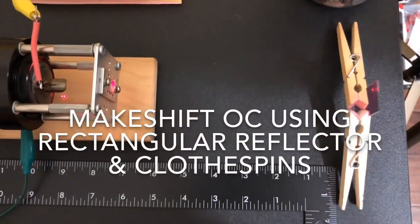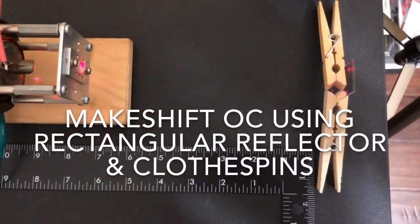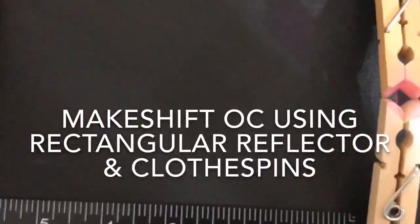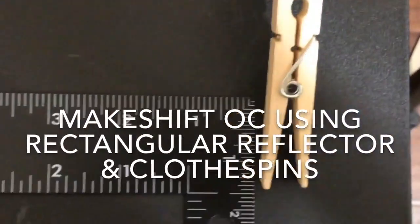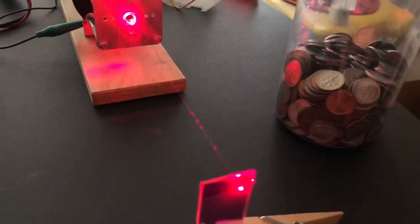Through careful adjustment, I was able to align an external output mirror using a makeshift mount from clothespins. Very subtle movements make a big difference in the effects of mirror alignment. For mirrors that are properly mounted, this isn't generally a problem.